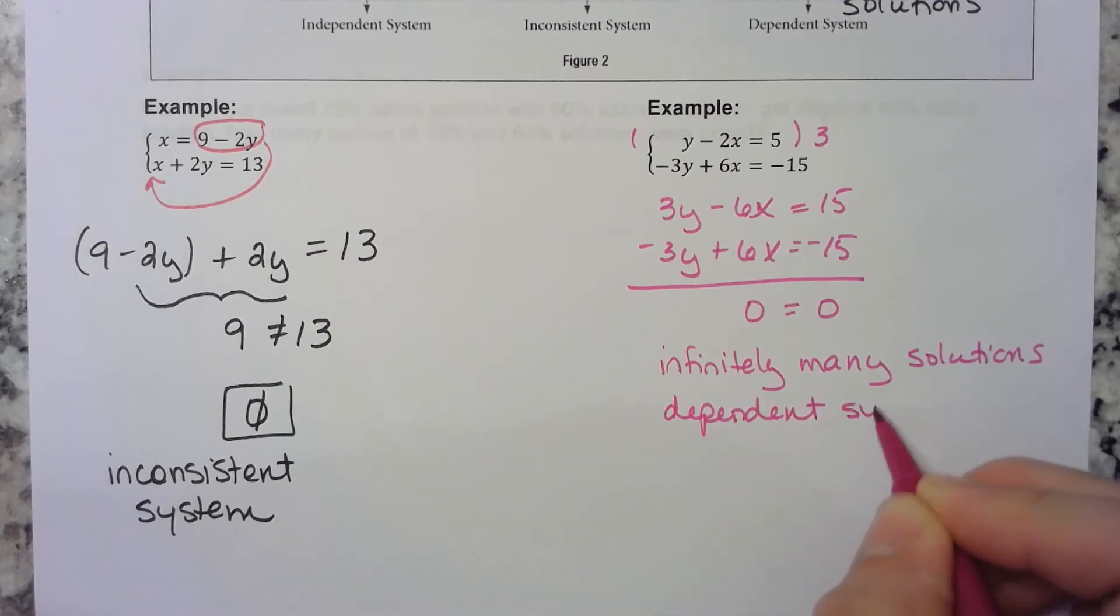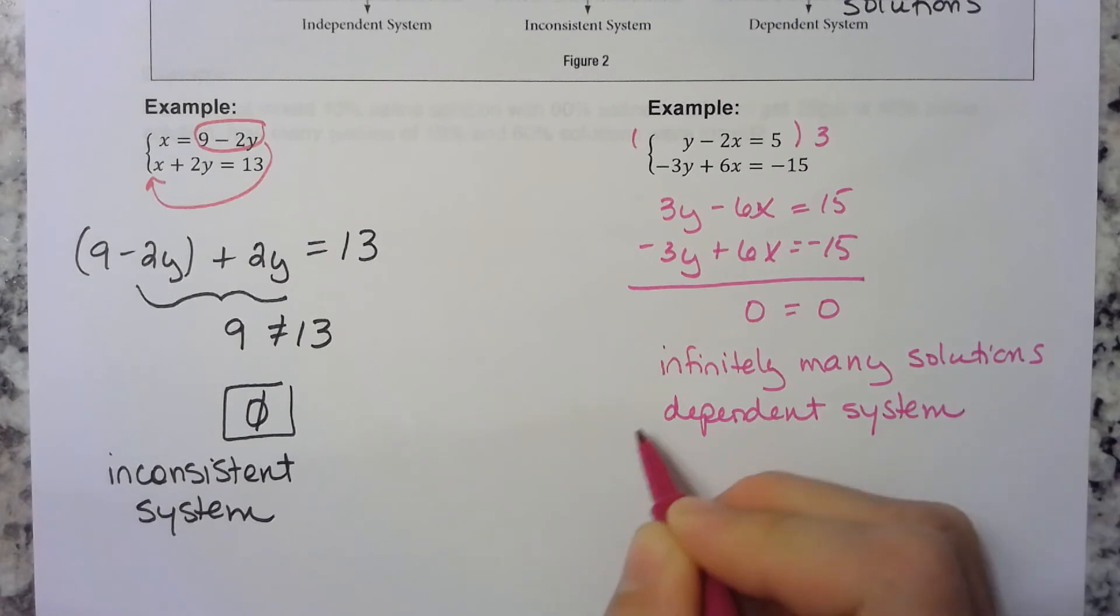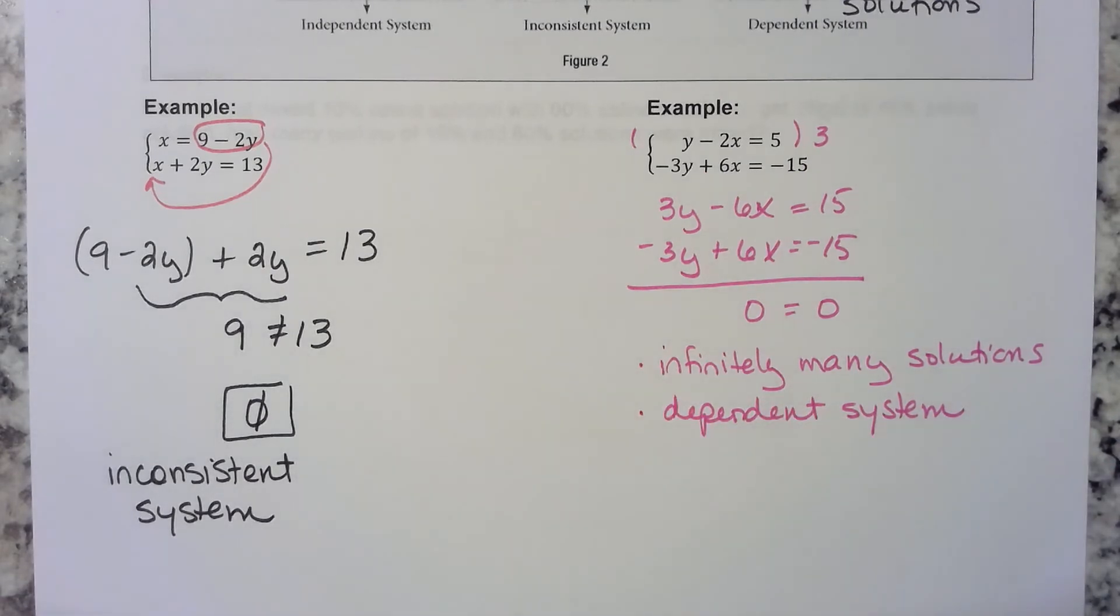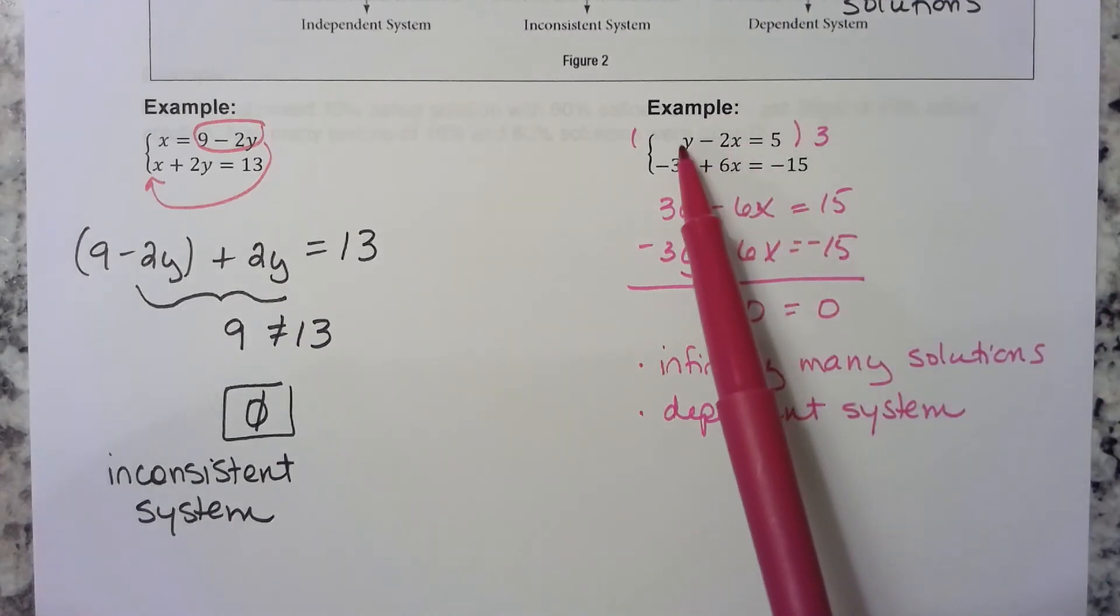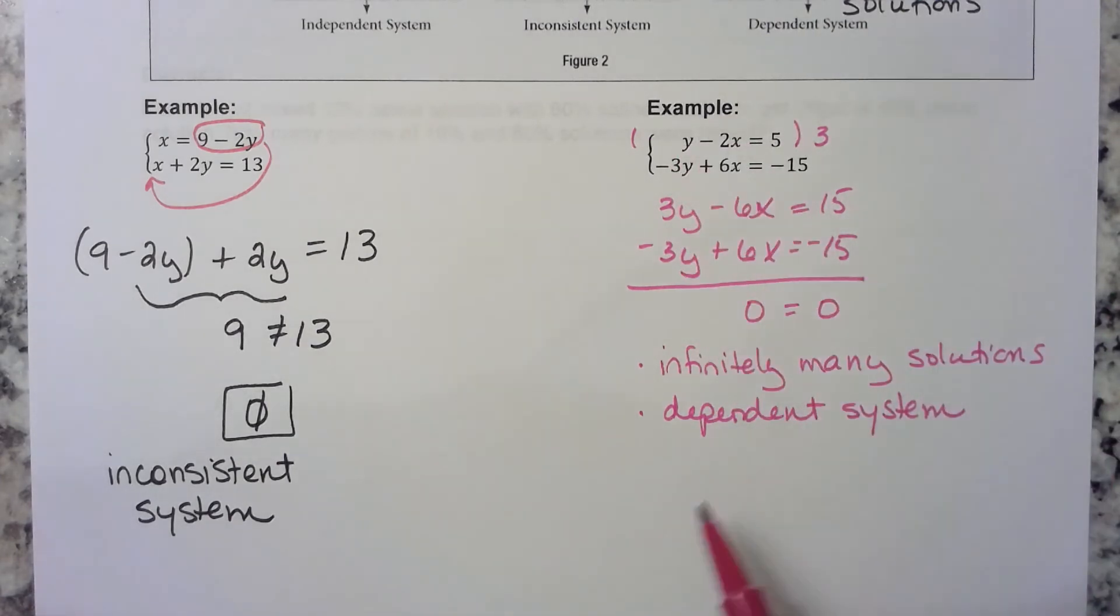Now, how can we write something that represents all those infinitely many solutions? Well, look back at our equations. Wouldn't it be easy to solve this one for y? We can add 2x to both sides, right? So y is equal to 2x plus 5.